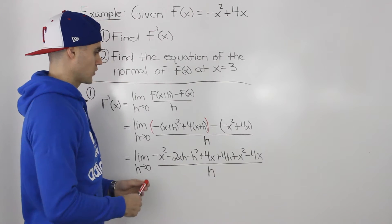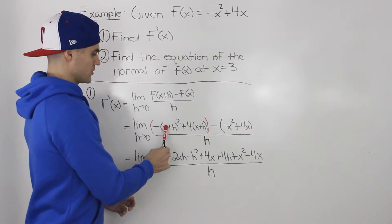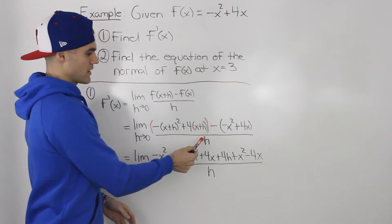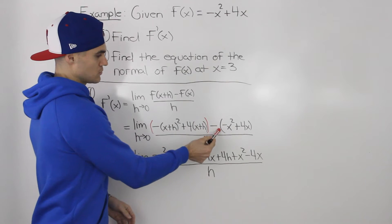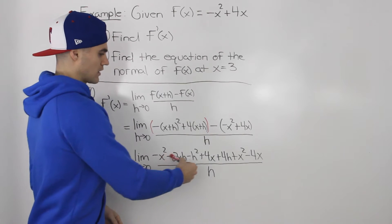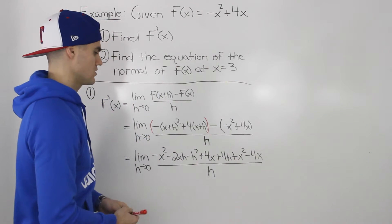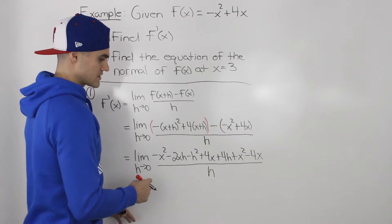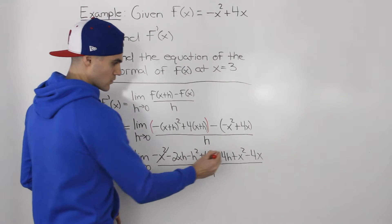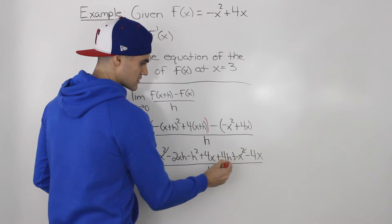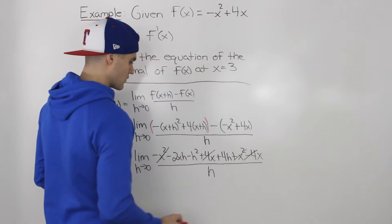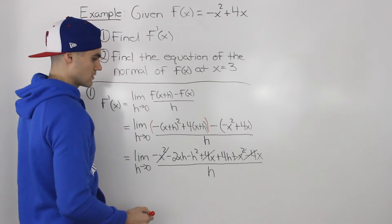Expanding the numerator, we foil the bracket, distribute the negative, distribute the 4 inside this bracket, and distribute the negative 1 inside the other bracket. Notice how a bunch of things cancel out: the negative x² and positive x² cancel, and the 4x minus 4x cancels out as well.